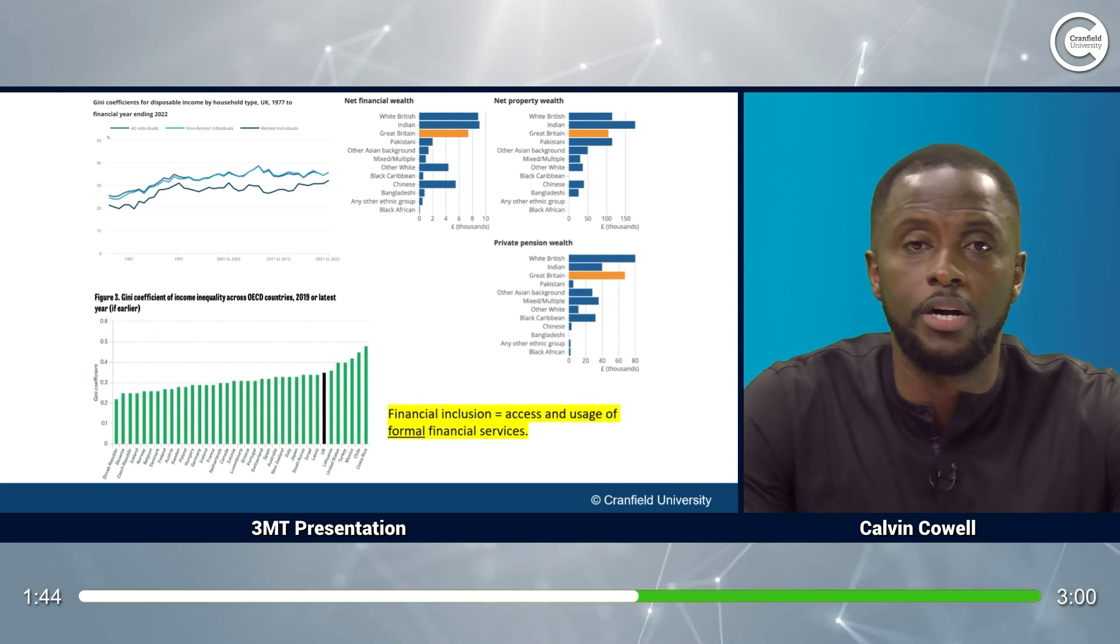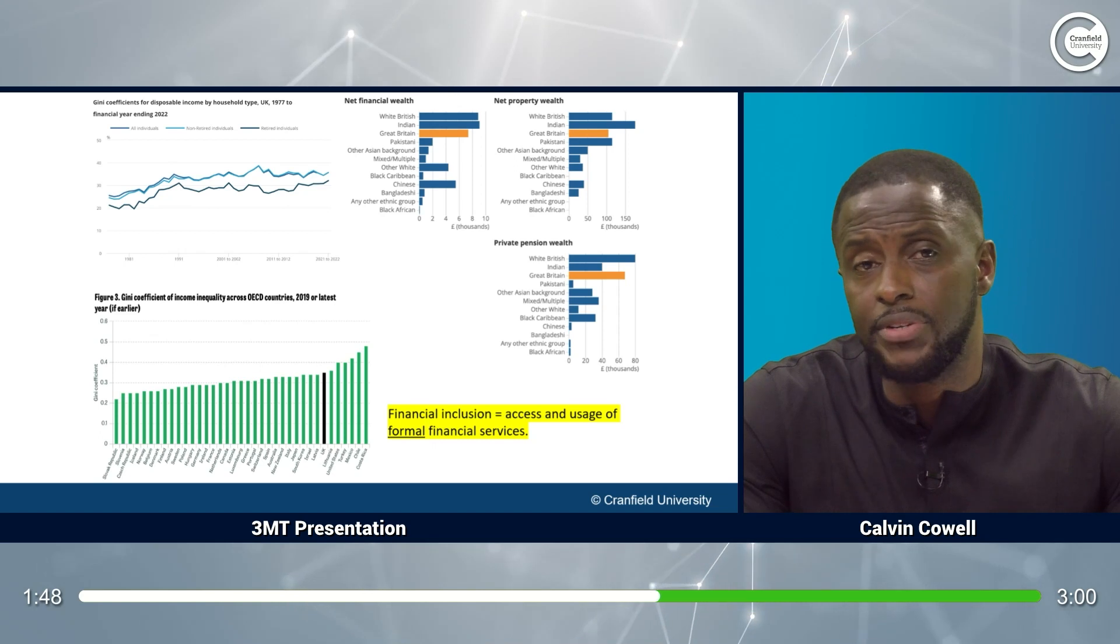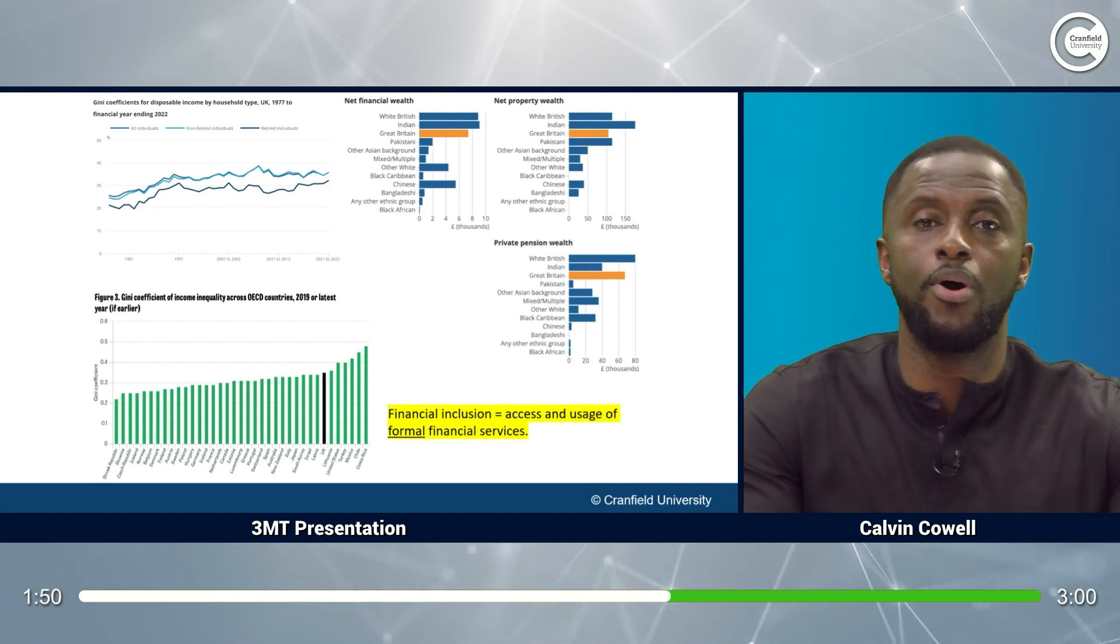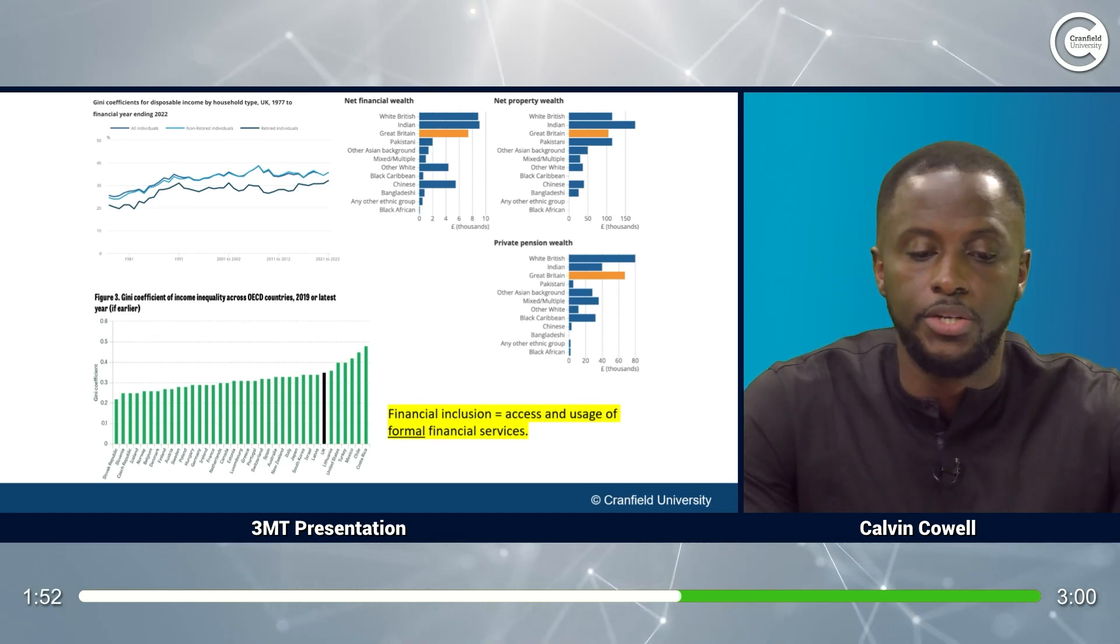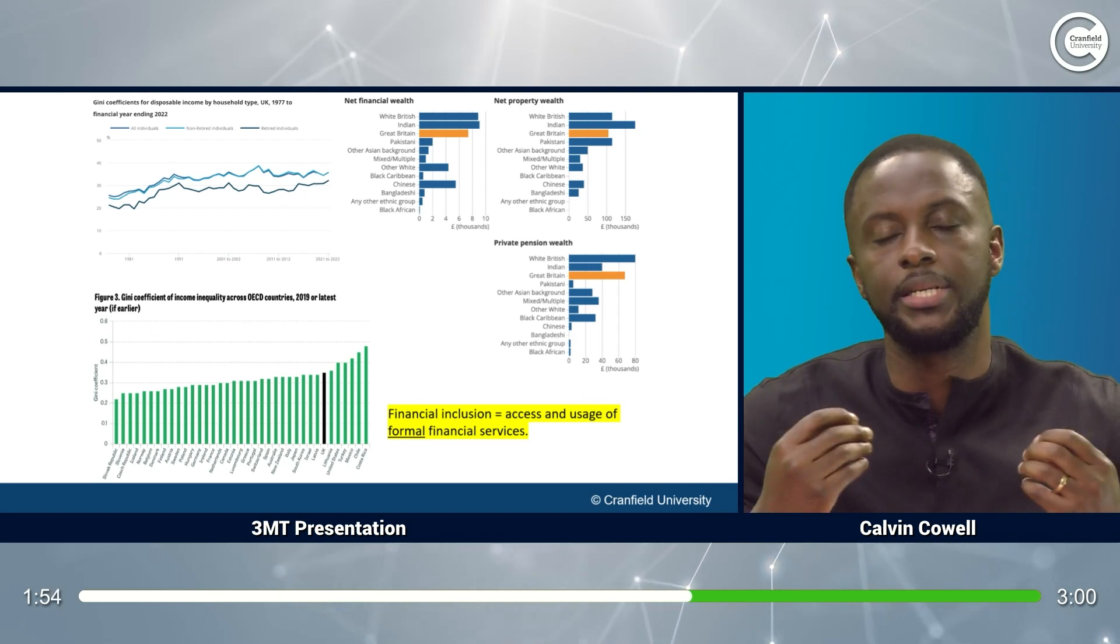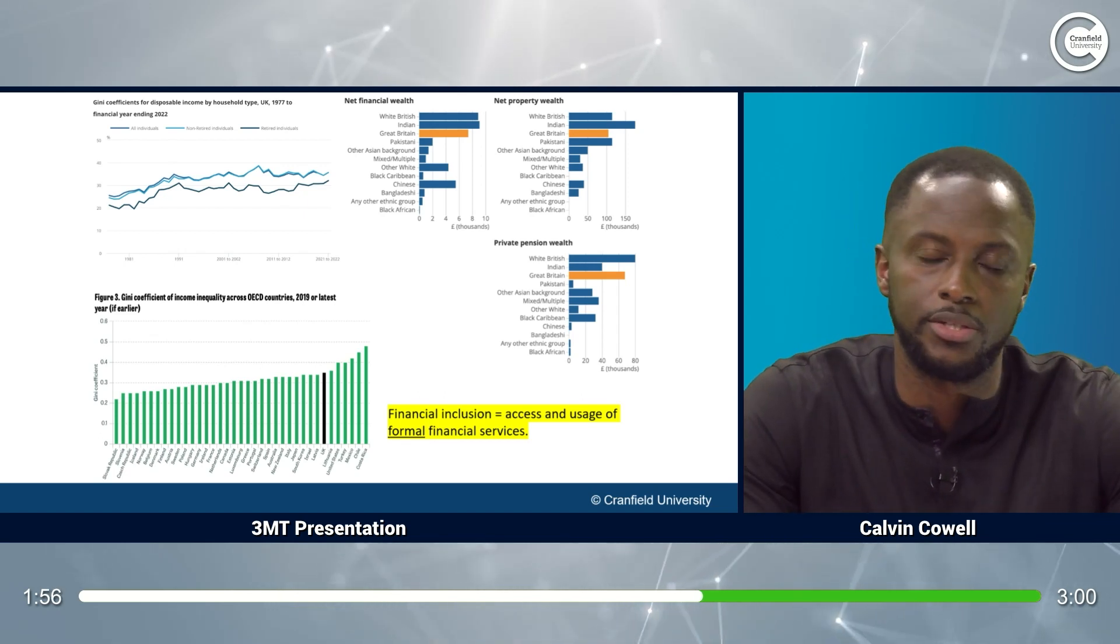So my research will start by conducting a systematic literature review to synthesize and delineate key components of financial inclusion to support the development of a more financially intelligent approach to addressing financial exclusion.